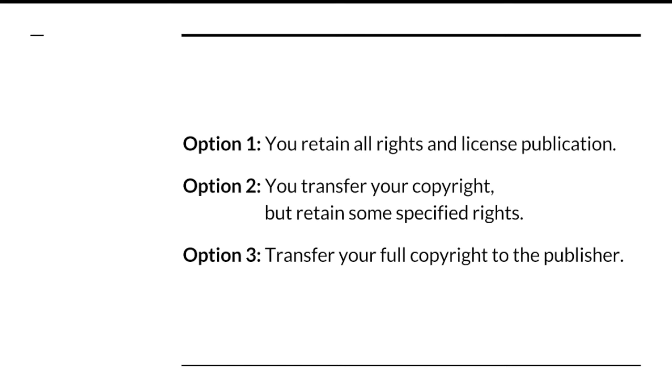The best case scenario is option one. This type of publishing agreement, where you retain your copyright and license publication, is most commonly found in open access journals. If you would like to learn more about open access journals, check out the first video in this workshop series called Introduction to Open Access, listed at the end of this presentation.